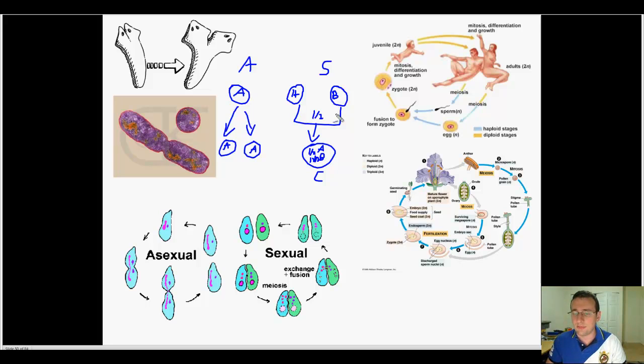So the key is that asexual reproduction is a copy process while sexual reproduction is a recombination process or any process that involves something like meiosis, fertilization, conjugation, exchanges of DNA and things like that.